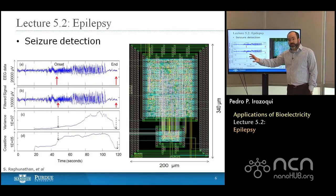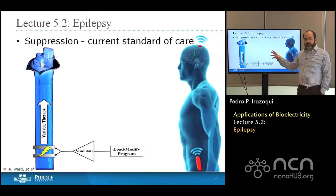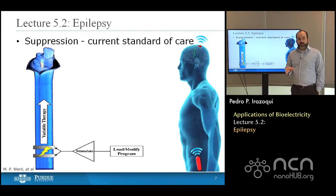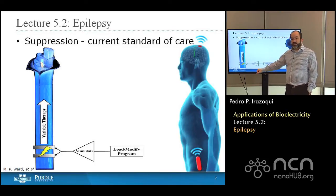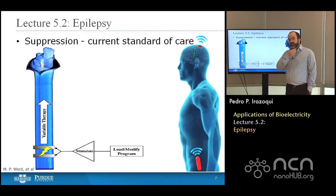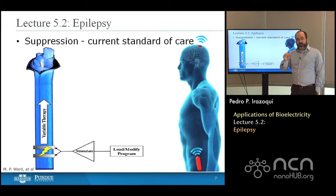Once you've recorded the activity and done seizure detection, the next step is to suppress the seizure. This is the work of another PhD from our group at Purdue, Matthew Ward, who began looking at vagal nerve stimulation. When we talk about epilepsy, the world leader in medical devices is a company called Cyberonics in Houston. Their vagal nerve stimulator activates the afferent neurons in the vagus nerve traveling down the neck; those neurons project to the brain, and by stimulating the vagus nerve, they can change electrical activity in the brain and reduce seizures. It has a dramatic effect on a wide patient population.